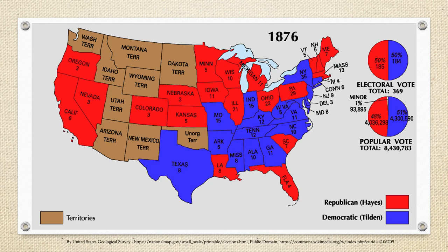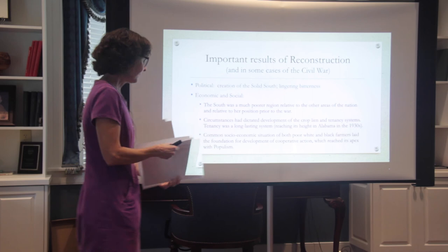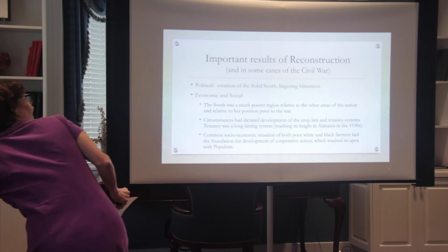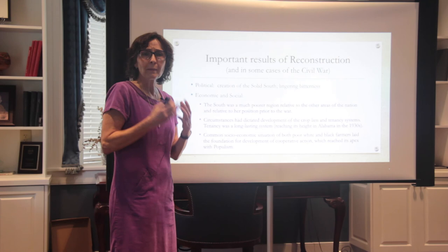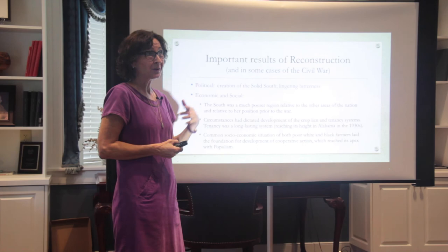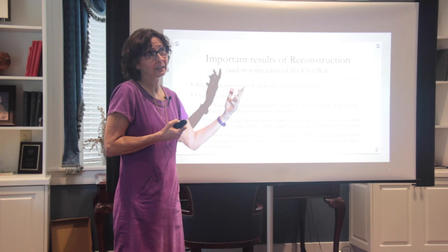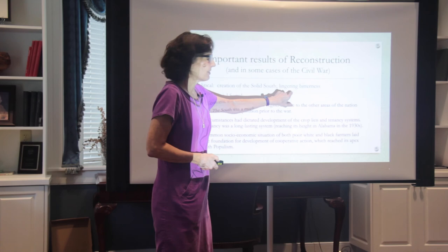It was a close election — one electoral vote is the difference. Politically, think about how long Reconstruction went on. In Alabama, it was 1865 to 1874 — nine years. And nationally, it's been going on for over a decade. A lot of bitterness lingers after this has finally ended politically.